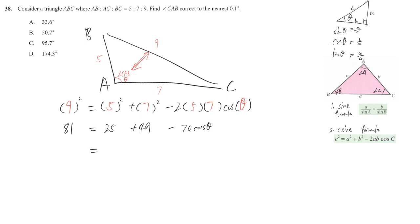Our target is to make theta be the subject. So, with theta to one side, without theta to another side. We have 70 cosine theta, 25 plus 49, minus 81, which is negative 7. So cosine theta is negative 7 divided by 70.